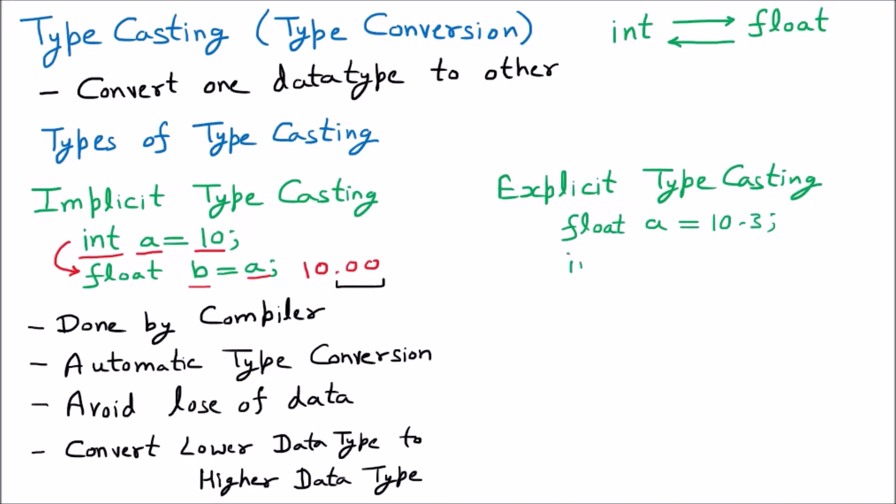Now if I say int b and I want to store a inside that, you can see we are trying to convert float into integer. If you're going to provide the direct conversion, that is not logical. Here we have to do explicit type conversion.